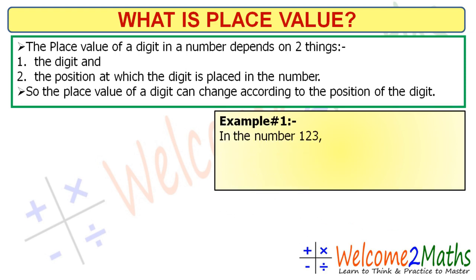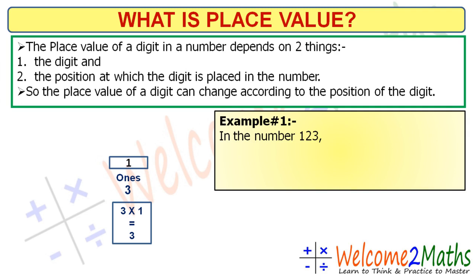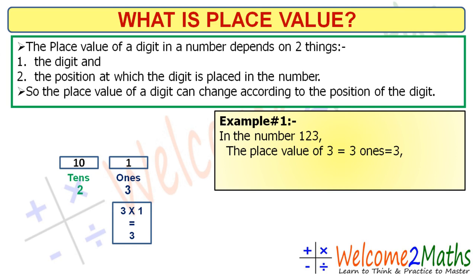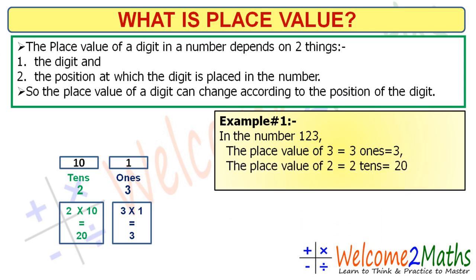Here is the number 123. We saw its face values earlier; now we will see the place values of its digits. We start from the ones place. 3 is at the ones place, so the place value of 3 is 3 × 1 = 3, that is 3 ones. Next, 2 is at the tens place, so the place value of 2 is 2 × 10 = 20, that is 2 tens.